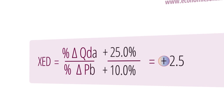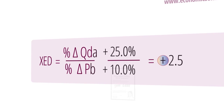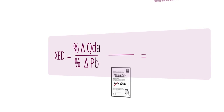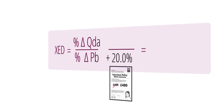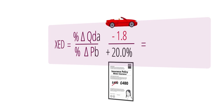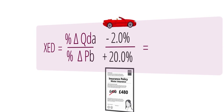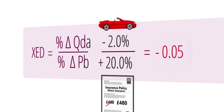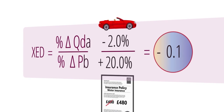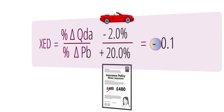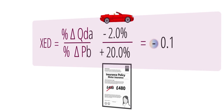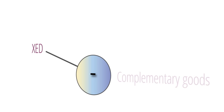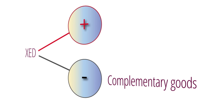Cross-elasticity can also have a negative value. For example, if the demand for motor vehicles falls by 2% following a 20% rise in the price of motor insurance, the XED of motor vehicles with respect to motor insurance is minus 0.1. Goods are identified as complementary goods when the coefficient of cross-elasticity is negative, and as substitutes when the relationship is positive.